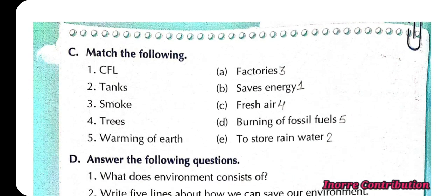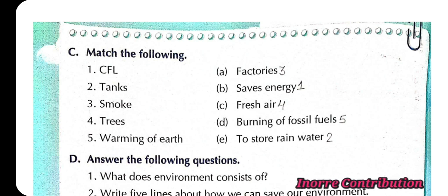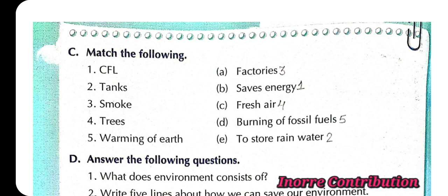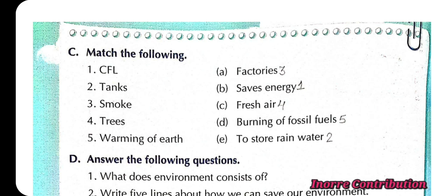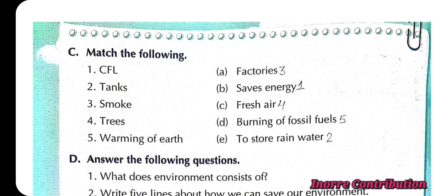Match the following. CFL saves energy. Tanks are used to store rain water. Smoke from factories makes the air harmful. Trees provide fresh air. Warming of the earth is caused by the burning of fossil fuels.